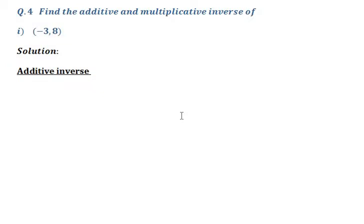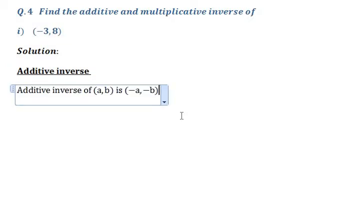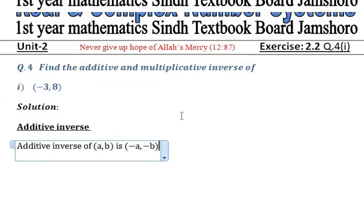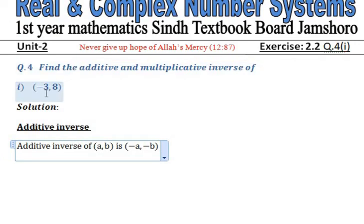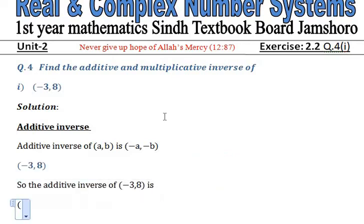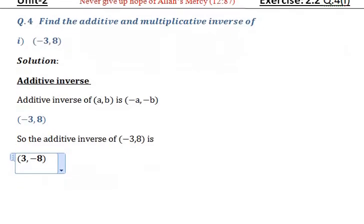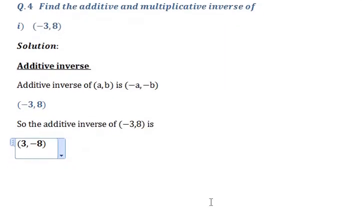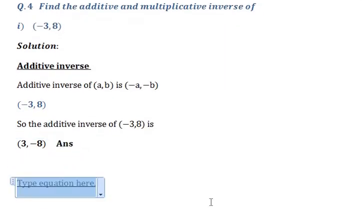So simply we can say the additive inverse of a is minus a, and the additive inverse of minus a is a. Now here the number is minus 3 comma 8, so the additive inverse of minus 3 is plus 3, and the additive inverse of 8 is minus 8.